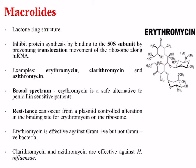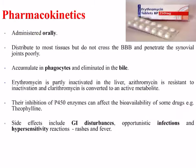Examples of the macrolide family include erythromycin, clarithromycin, and azithromycin. These are generally broad spectrum; erythromycin is a safe alternative for penicillin-sensitive patients. Resistance can occur from a plasmid-controlled alteration in the binding site for erythromycin on the ribosome. Erythromycin is effective against gram-positive but not gram-negative bacteria, whereas clarithromycin and azithromycin are effective against Haemophilus influenzae. Erythromycin is administered orally and distributes to most tissues but does not cross the blood-brain barrier and penetrates synovial joints poorly.